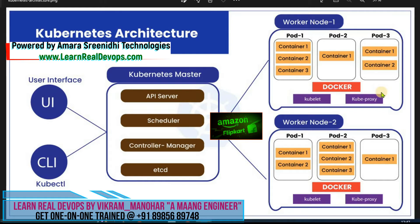We have two worker nodes — worker node 1 and worker node 2. If worker node 1 with three pods goes down, Kubernetes will ensure that the desired state of six pods is always maintained by adding the remaining three pods to a worker machine which has sufficient resources to create those three pods, so that the total desired state of six pods is maintained. Worker node 2 will be available, and the application — a copy of Facebook, WhatsApp, Amazon, or Flipkart — will be running inside every container.